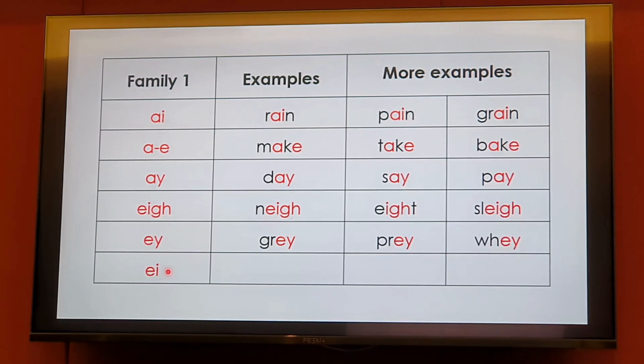Let's look at the last phonogram, E-I, A, as in veil. Can you think of more examples? Vein, faint.